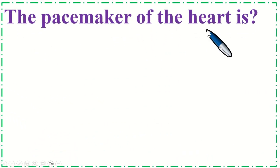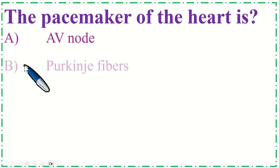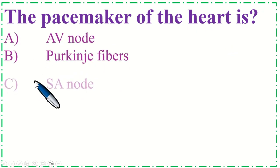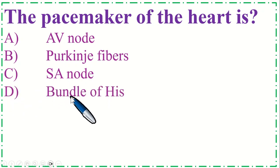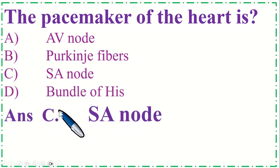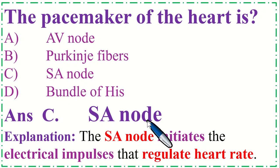The pacemaker of the heart is: Option A: AV node, B: Purkinje fibers, C: SA node, and Option D: Bundle of His. The correct option is C, SA node. The SA node initiates the electrical impulses that regulate heart rate.